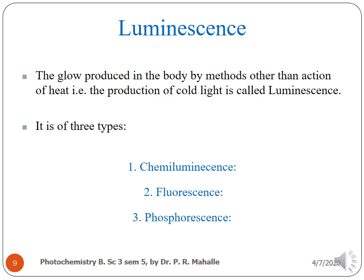Now luminescence. The glow which is produced in a body by methods other than the action of heat — i.e., the production of cold light — is called luminescence. Luminescence is of three types.